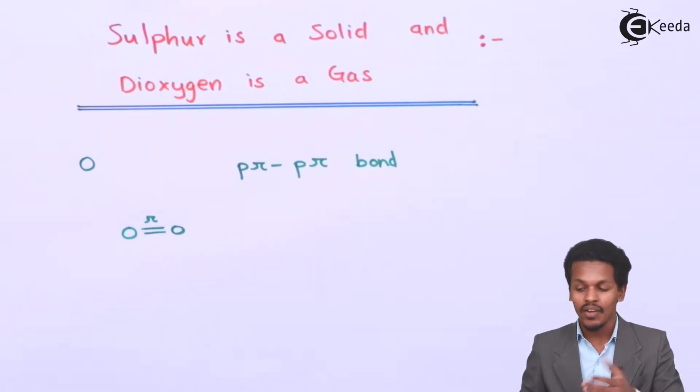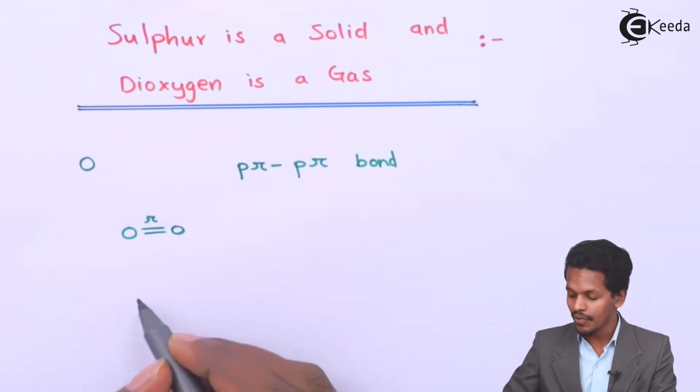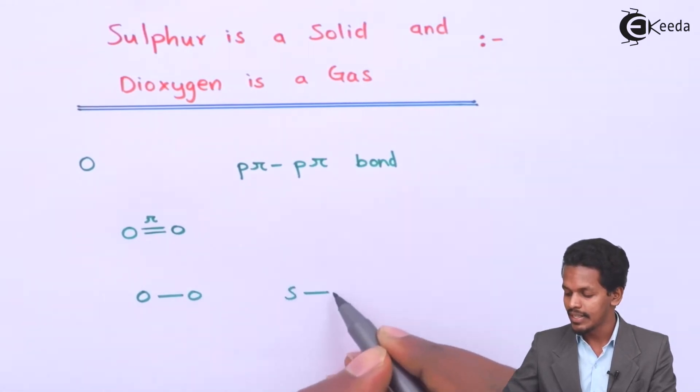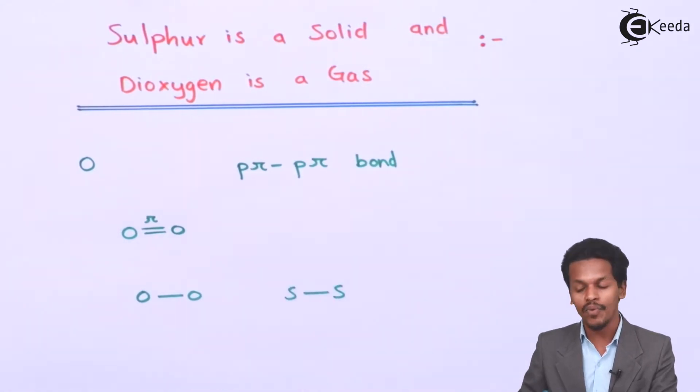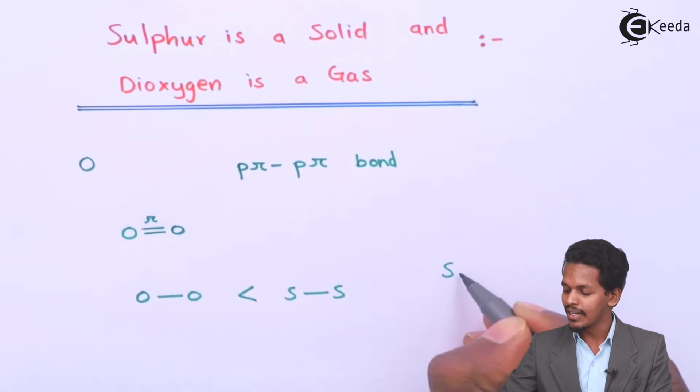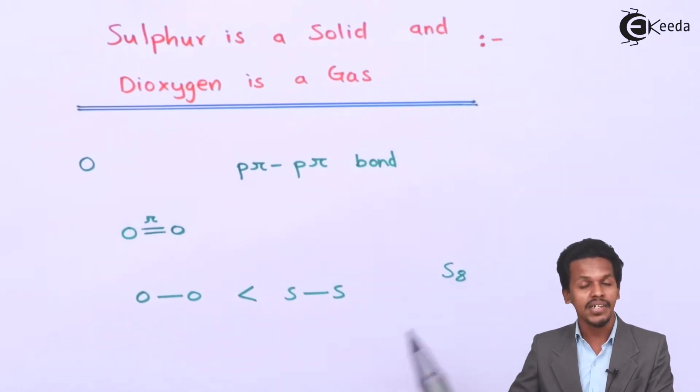That's the reason that sulfur has a tendency to form a single bond with other sulfur. When comparing oxygen-oxygen single bonds with sulfur-sulfur single bonds, it has been found that the sulfur-sulfur single bond is very much stronger compared to oxygen single bonds. That's the reason that sulfur has a property known as catenation.